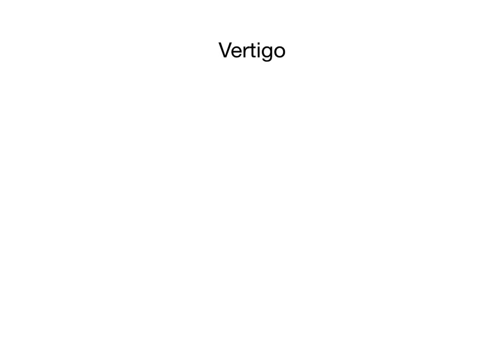Broadly speaking, vertigo should be divided into two categories: central vertigo and peripheral vertigo. Central vertigo is caused by central nervous system causes — aka the brain. Peripheral vertigo is what people mean when the layperson says they're experiencing vertigo, and it is caused by peripheral causes, meaning it's localized to the inner ear.